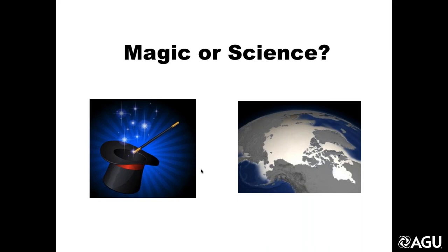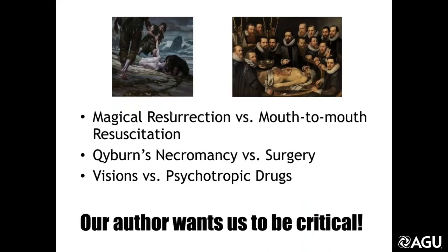We may never know the real answer, but I think our author is trying to make the parallel and make us question things. He does this a lot. In A Feast for Crows, the book begins with people getting magically resurrected on a beach — but it might actually be mouth-to-mouth resuscitation. The character Qyburn is kicked out of the Citadel for necromancy, opening bodies of the living — but is that just surgery? And Daenerys, when she goes into the House of the Undying and has visions, also drank Shade of the Evening before that — are these really magical visions or are these psychotropic drugs? Our author wants us to question it.